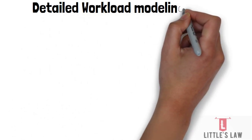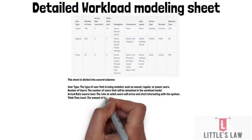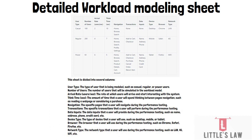The most complex workload model includes columns for user type, number of users, arrival rate, think time, navigation, transactions, data inputs, device type (desktop, mobile, tablet), browser type, and network type. All of this information must be decided during workload modeling, drafted, and signed off by the customer.